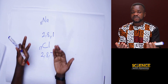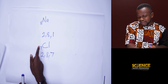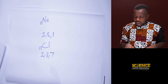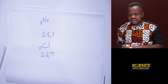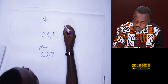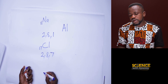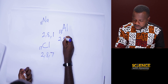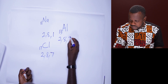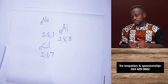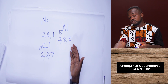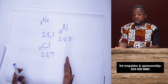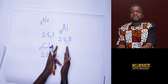Atoms come together and form compounds because they want to achieve stability. Sodium has 1 electron in its outermost shell making it unstable, and it needs to lose that 1. Now let's take aluminum, the 13th element. Its configuration is 2, 8, 3. Aluminum is also not stable because of the 3 in the outermost shell — it must either lose or gain electrons to achieve 2 or 8.